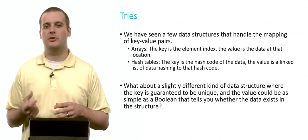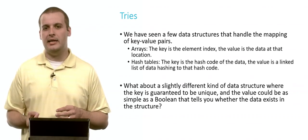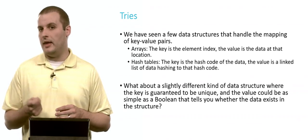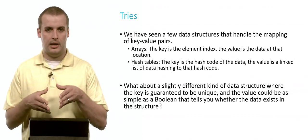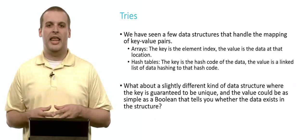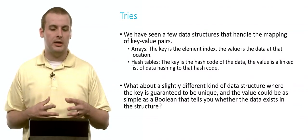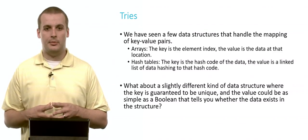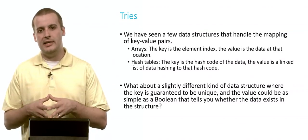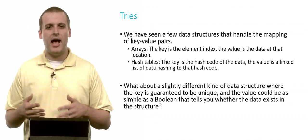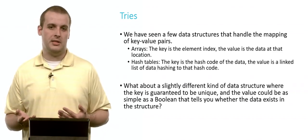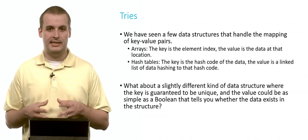What about a method where the key is guaranteed to be unique, unlike a hash table, where we could end up with two pieces of data having the same hash code? So now we can guarantee that our key will be unique. And what if our value was just something as easy as true and false that tells us whether or not that piece of information exists in the structure? A Boolean could be as simple as a bit.